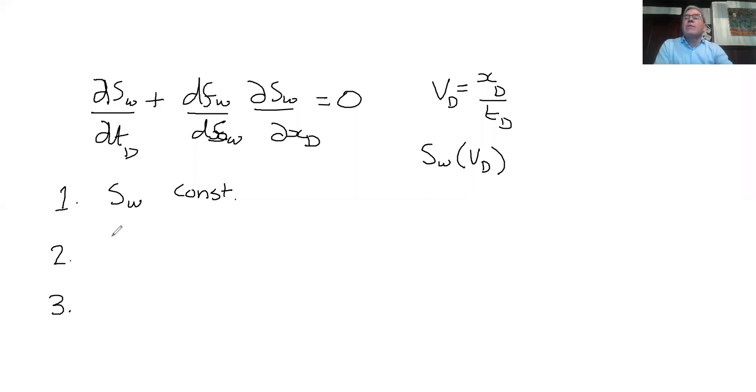One is where the saturation varies smoothly with distance or V_D to P_D. And we have a dimensionless speed that's dF_W by dS_W.